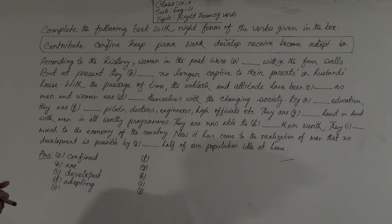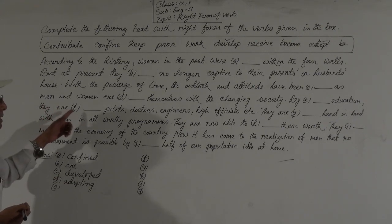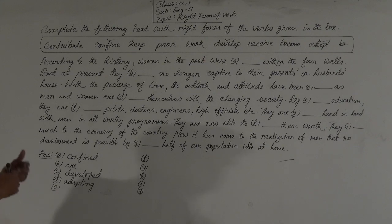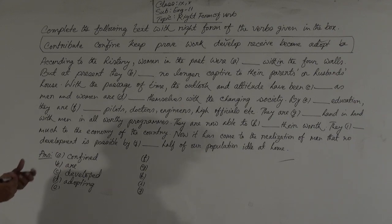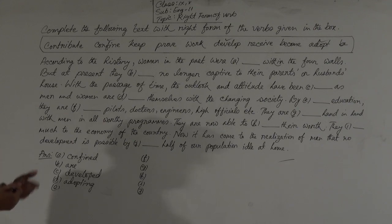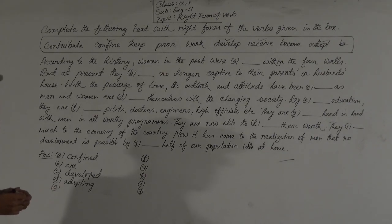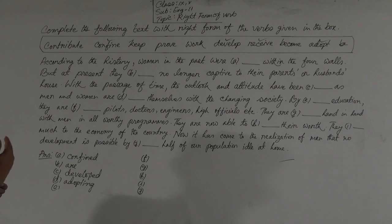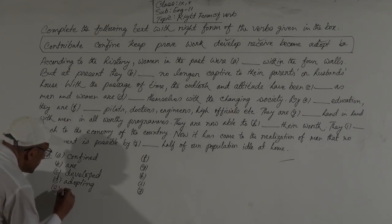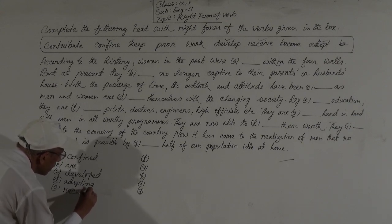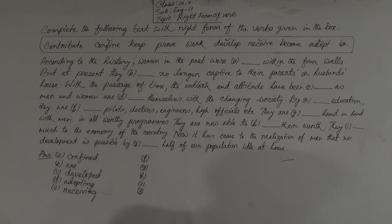Gap E: by dashed education, they are dashed — pilots, doctors, engineers, high officials, etc. After the preposition 'by,' you have to use verb plus -ing form. There is a verb 'receive' in the box, so 'receive' will become 'receiving.' Gap E will be 'receiving.' The phrase reads: by receiving education.